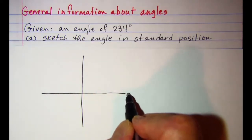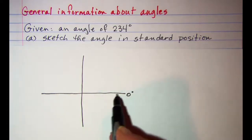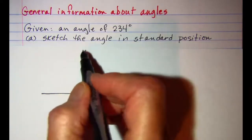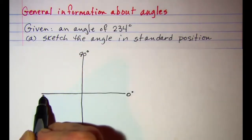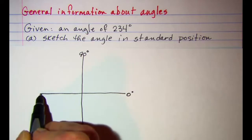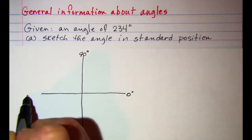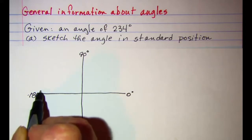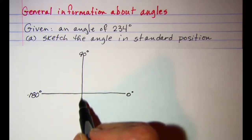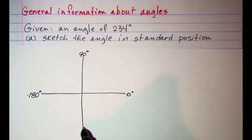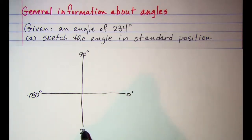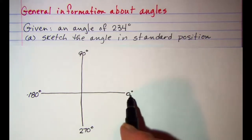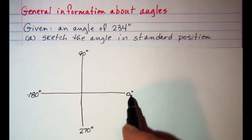We begin at 0 degrees here at the horizontal, then the vertical is 90 degrees. The horizontal on the negative x-axis is 180 degrees, and then our vertical on the y-axis in the negative direction is 270 degrees. We could go back up and have 360 degrees here if needed.